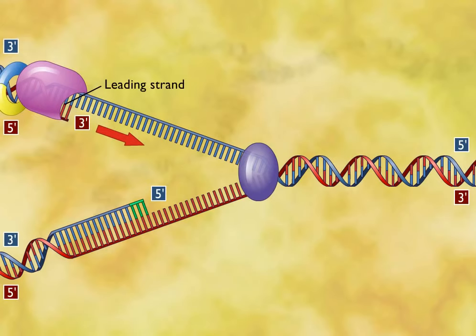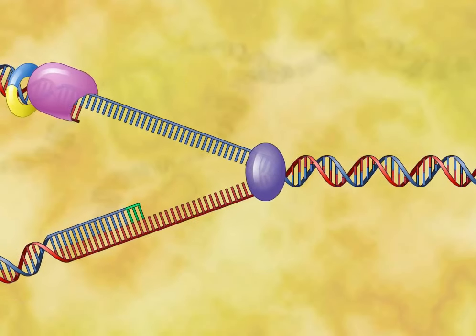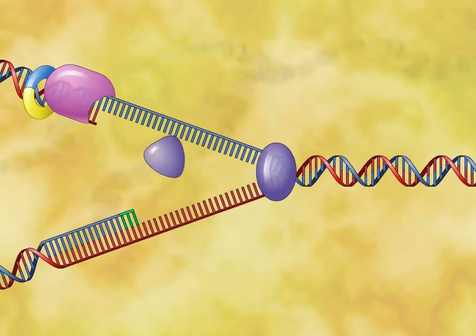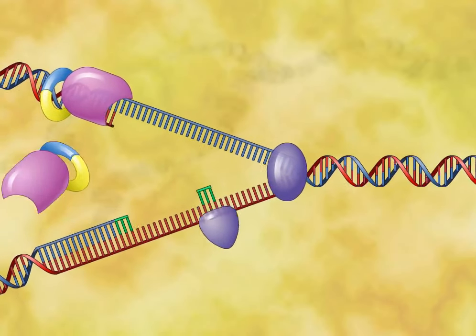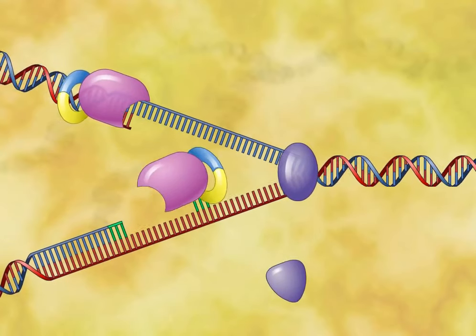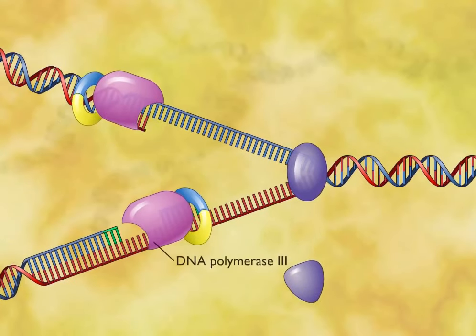In contrast, the lagging strand, which elongates away from the replication fork, is synthesized discontinuously as a series of short segments called Okazaki fragments. When the DNA polymerase 3 reaches the RNA primer on the lagging strand,